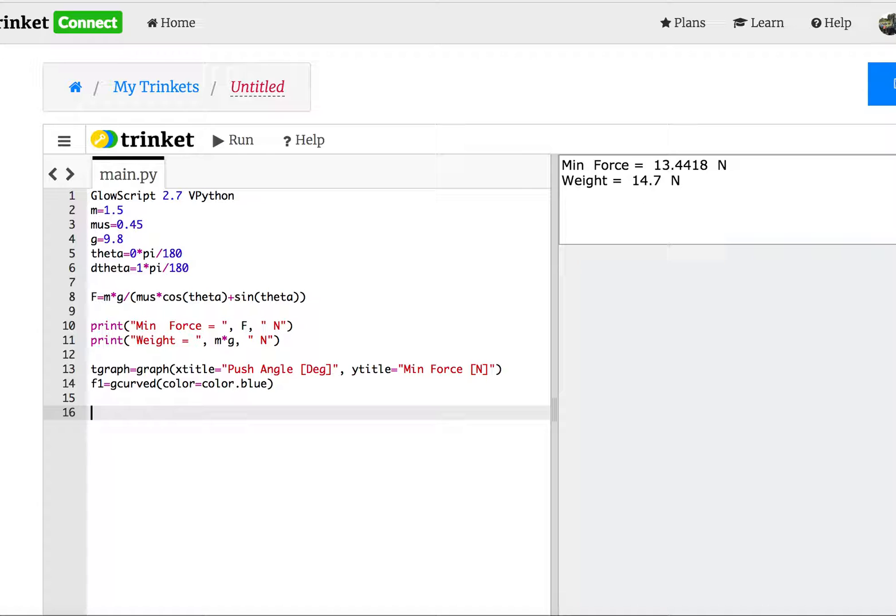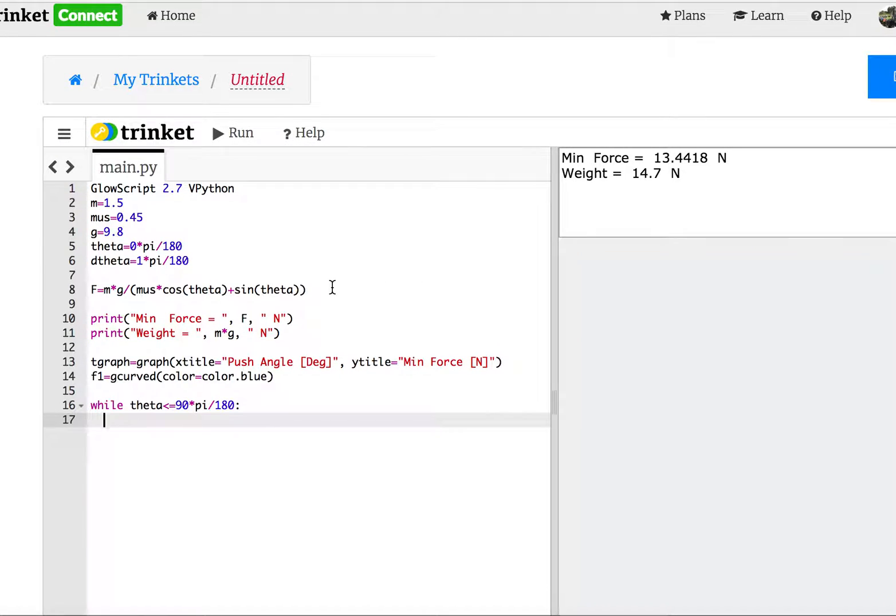So now let's do this problem. So I'm going to say while theta is less than or equal to 90 degrees, which is 90 times pi divided by 180, do the following. Step one, calculate the force. Well, there's my force, I can just copy that down here.